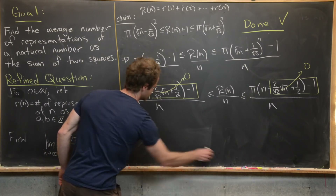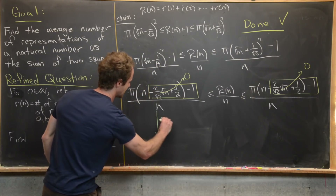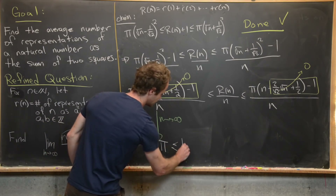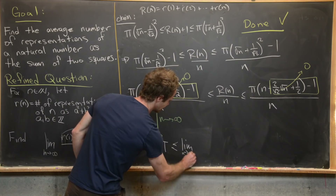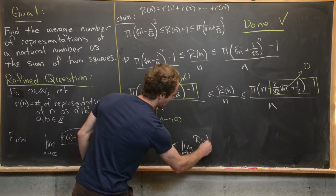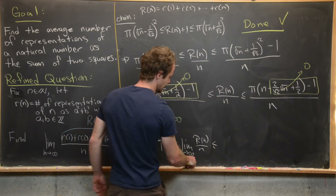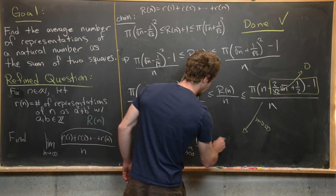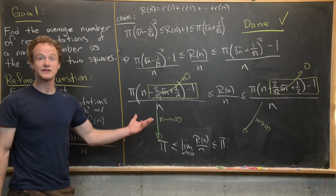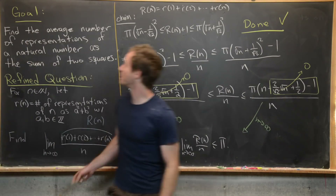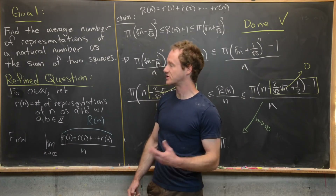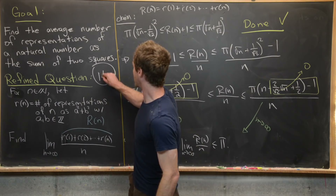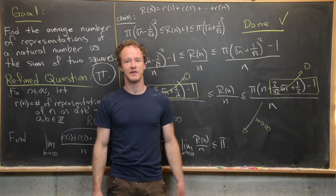Taking n to infinity, the left side tends to π and the right side also tends to π, so by the squeeze theorem: π ≤ lim_{n→∞} R(n)/n ≤ π. Therefore the limit equals π. The average number of representations of a natural number as the sum of two squares is π.